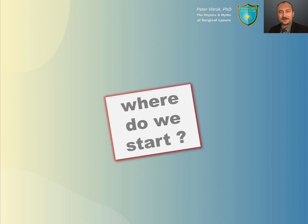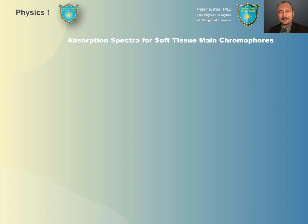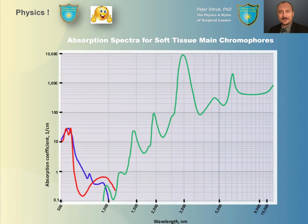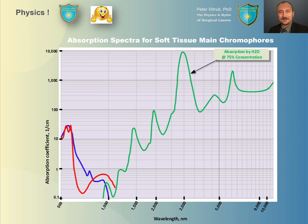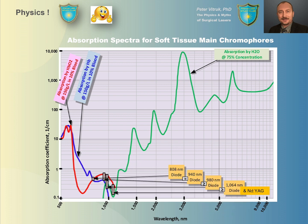To answer where specific lasers belong on the map, we need to look at the physics of laser-tissue interaction — specifically the optical properties and the absorption spectrum for the main soft tissue chromophores. Here is the absorption spectrum for water at a histologically relevant concentration of 75%, and for oxyhemoglobin at a histologically relevant blood presence of 10%. Now let's place all of the diode and neodymium YAG lasers on this chart.